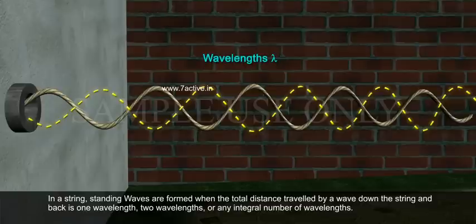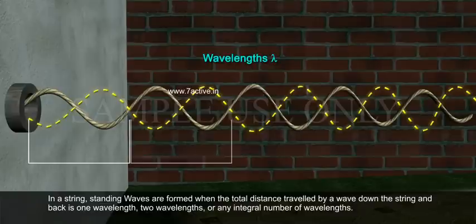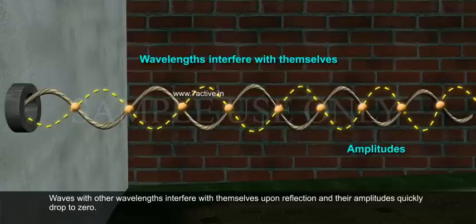In a string, standing waves are formed when the total distance travelled by a wave down the string and back is one wavelength, two wavelengths, or any integral number of wavelengths. Waves with other wavelengths interfere with themselves upon reflection and their amplitudes quickly drop to zero.